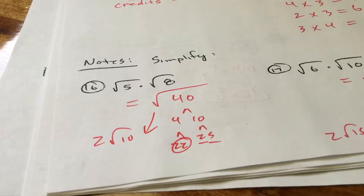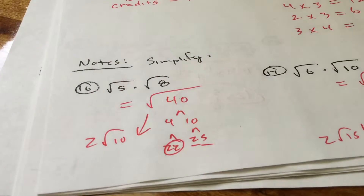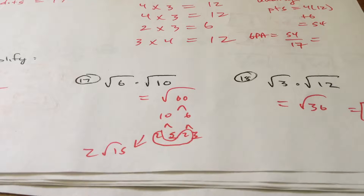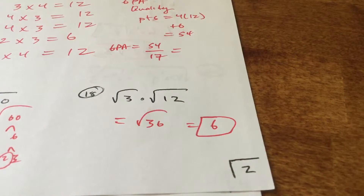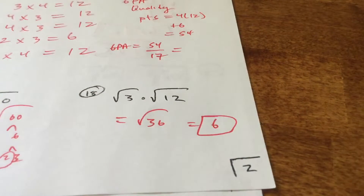Simplify. Root 5 times root 8: because you're taking the same root — the second root of both — you can multiply within. 5 times 8 is 40, then we break it down. The square root of 40 is 2 root 10. Square root of 6 times square root of 10 is the square root of 60, and you break that down to 2 root 15. Square root of 3 times square root of 12 is the square root of 36, which is exactly 6.